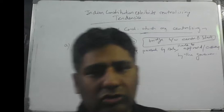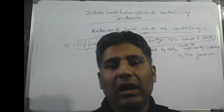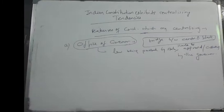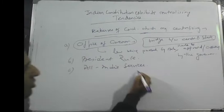If the Governor mentions that a constitutional breakdown has happened in the state and continuing with the state government is against the norms of the Constitution, then the center has to impose President's Rule. So President's Rule is another feature which exhibits the centralizing tendency. Then you have All India Services — employees of the center working in the state.